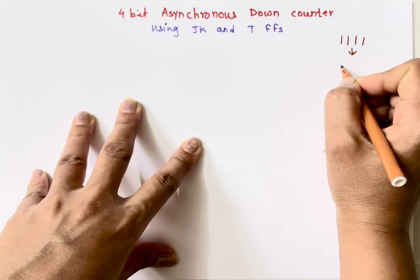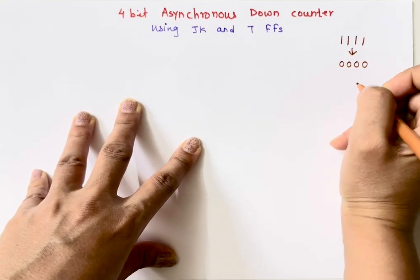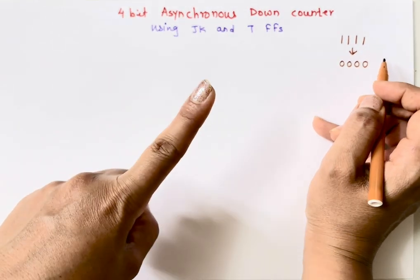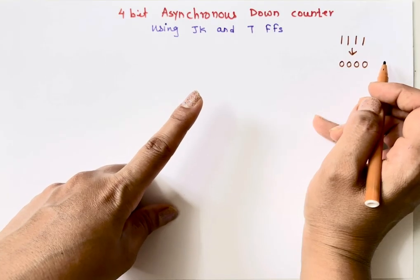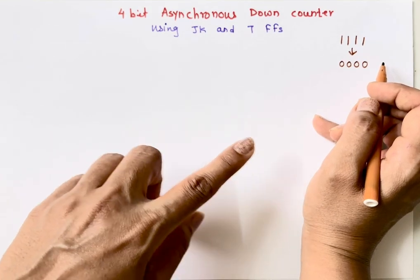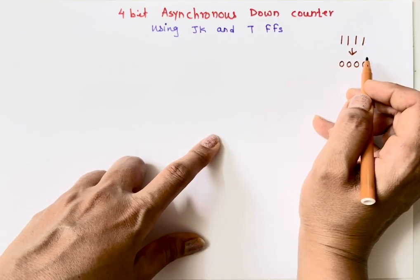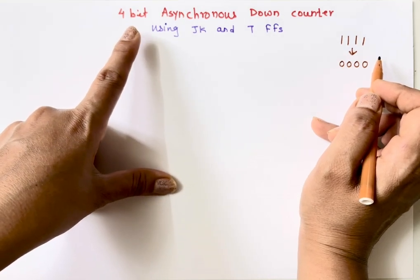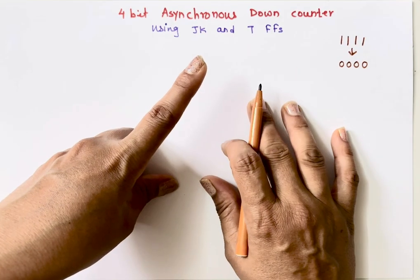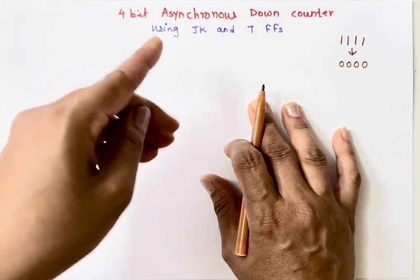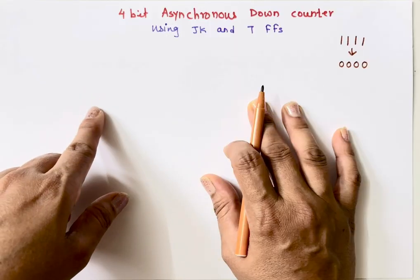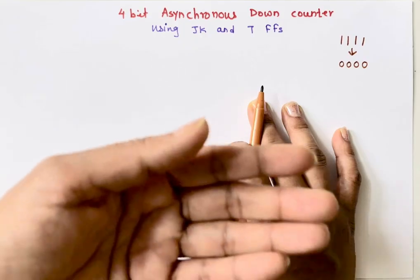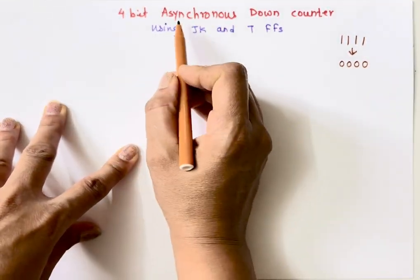It will count from 15 down to 0000. This is an asynchronous counter. Since we have four bits and one flip-flop stores one bit of data — also called a one-bit memory cell — we need four flip-flops. In an asynchronous counter, the external clock is given to only one flip-flop, the one generating the least significant bit. The output of that flip-flop is connected to the clock input of the second flip-flop, and so on.